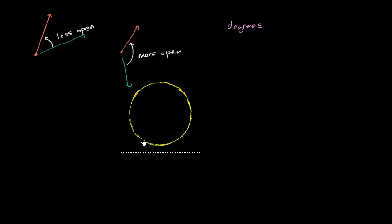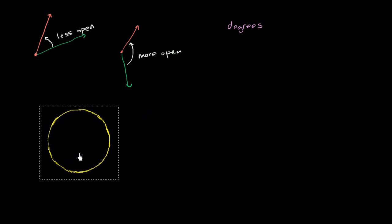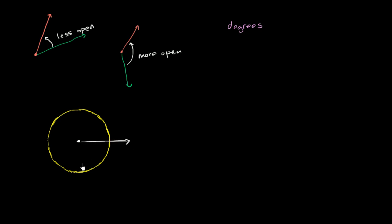The degrees convention really comes from a circle. So let's draw ourselves a circle right over here. The convention — what everyone has been doing — is that you have 360 degrees in a circle. If that's the center of the circle and we make this ray our starting point, or one side of our angle, if you go all the way around the circle, that represents 360 degrees.